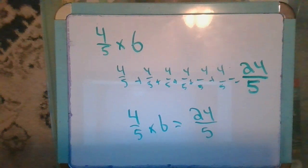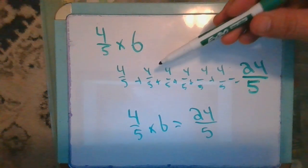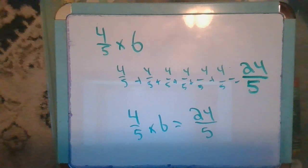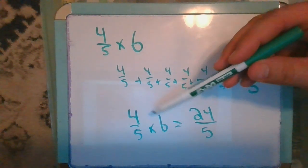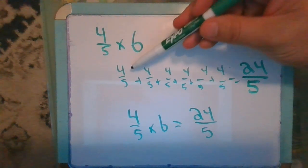So that shortcut method does seem to hold true, but now we can see why it holds true. You multiply the whole number times the numerator, because that's what's getting added up repeatedly.